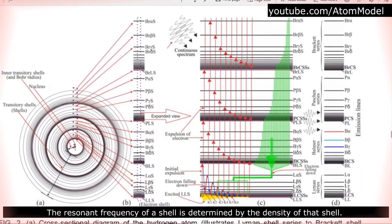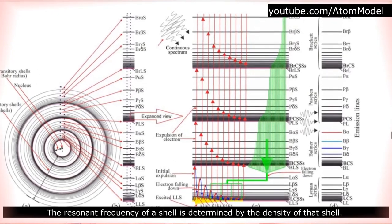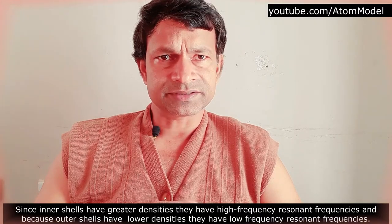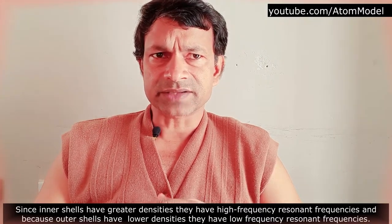The resonant frequency of a shell is determined by the density of that shell. Since inner shells have greater densities, they have higher resonant frequencies.